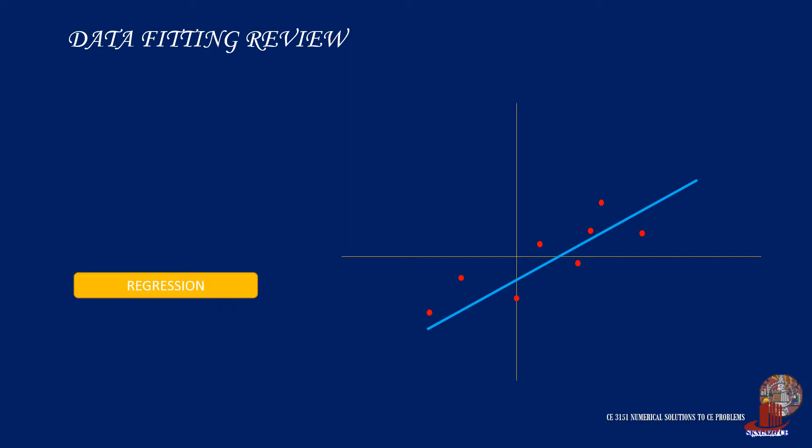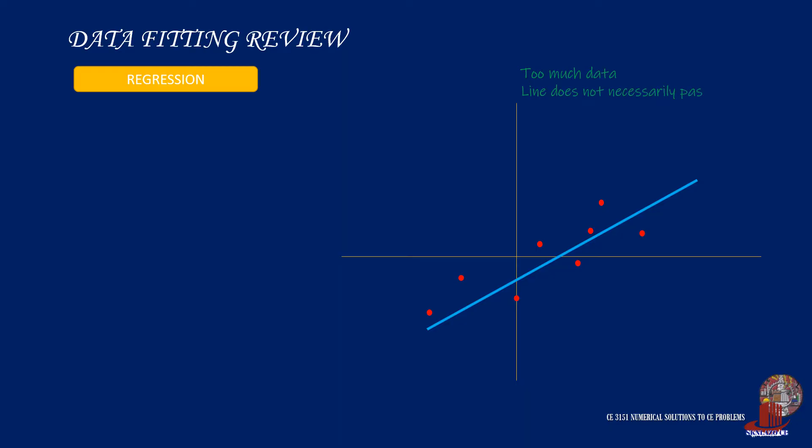The first method of curve fitting is regression. In cases when one is given a number of points in a table and has to find the function, regression is used. More often, the curve or line will take the mean and does not actually intersect all the points in the set.